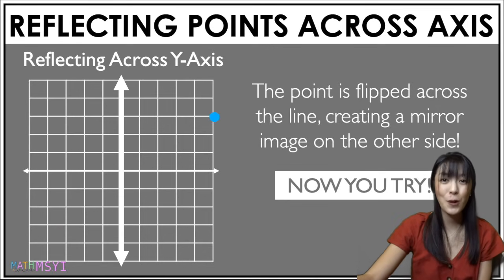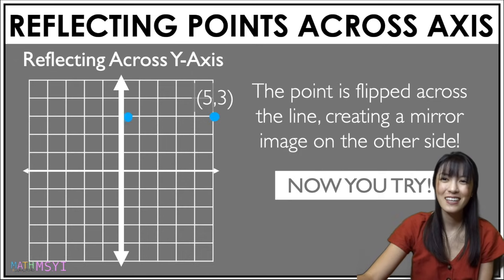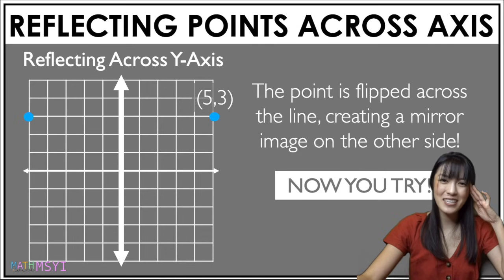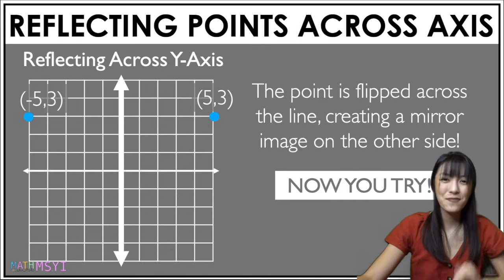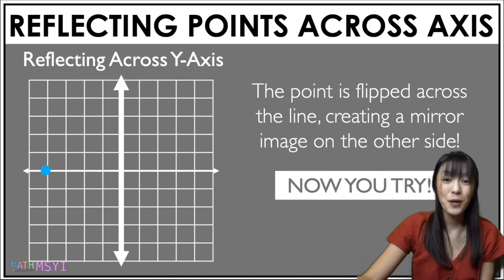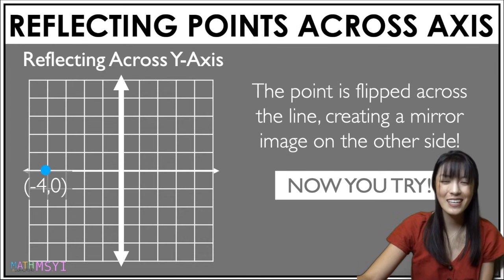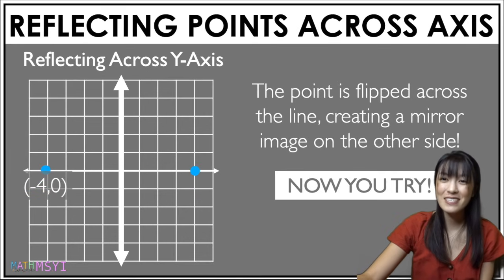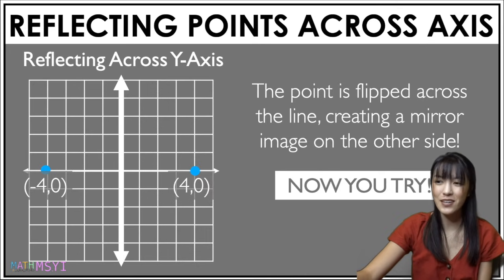Let's try this one. Put your finger where you think it will be. Let's animate it — think of the coordinates: it's 5, negative 5, comma 3. Put your finger where you think the next one will be. Let's animate it — think of the coordinates: it's positive 4, 0.